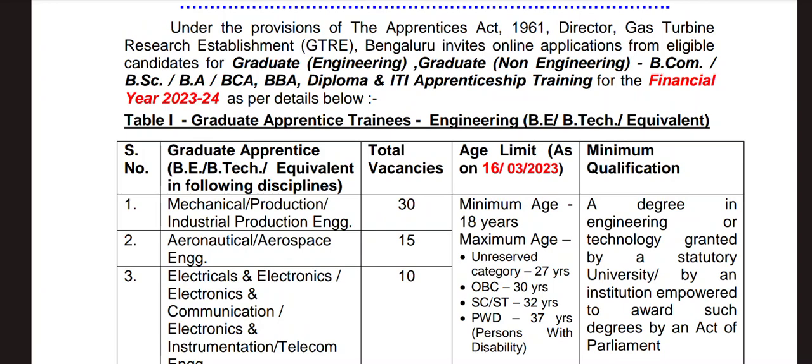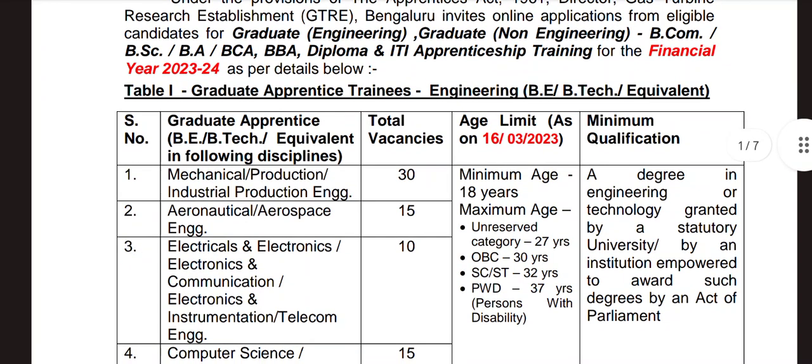We have a minimum age limit. Maximum age: OBC category is 30, unreserved category is 22, SC/ST category is 32, PWD category is 32.